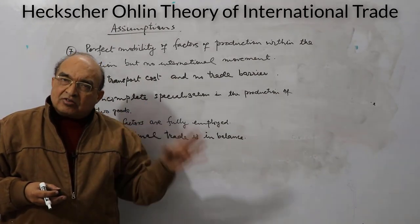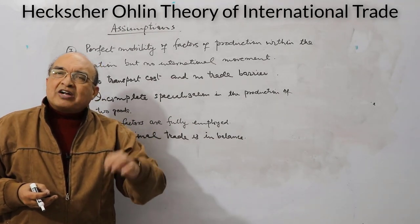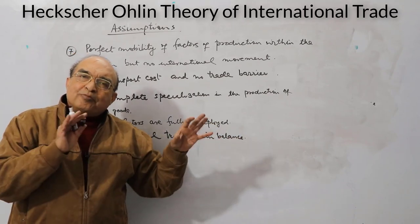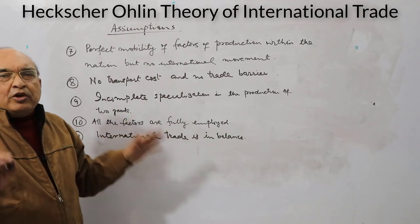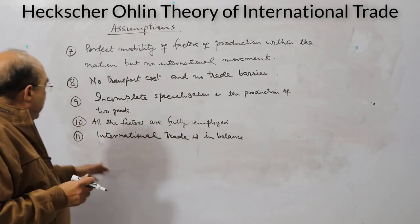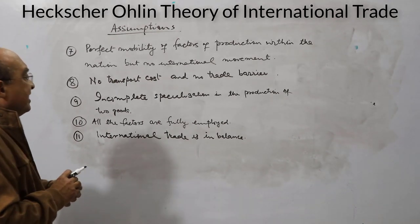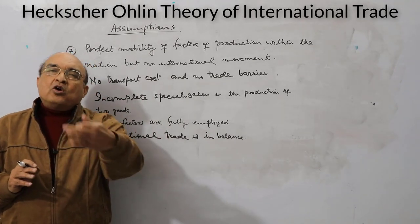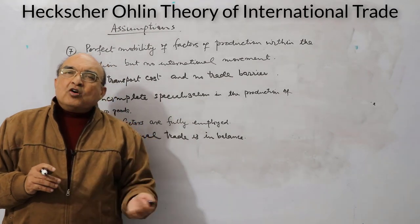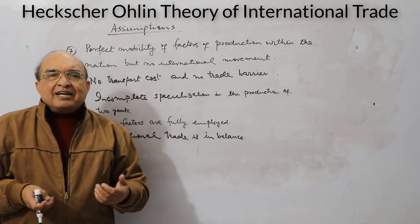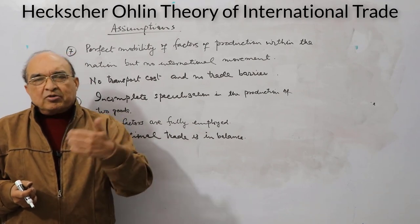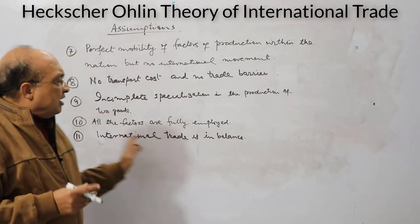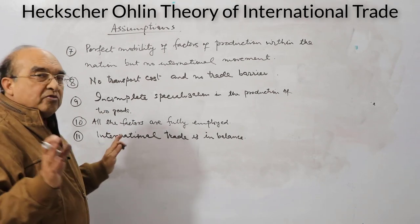Both countries have both factors of production — one is endowed more with labor, the other more with capital — and all factors are fully employed in their respective countries. Finally, international trade is balanced: exports finance imports. It is not that exports exceed imports or imports exceed exports, so trade is assumed to be fully balanced — each nation's exports equal its imports.